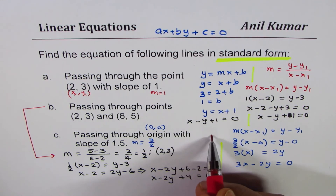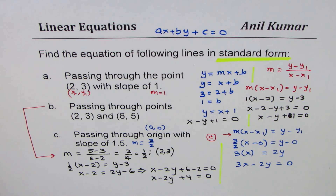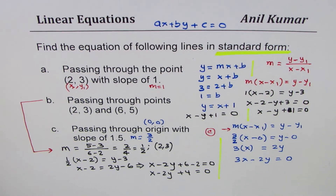I hope with these seven examples you now understand how to write the equation of a line from given conditions in slope-intercept form or in standard form. Feel free to post comments, share my videos, and if you like that would be great. Thank you and all the best.